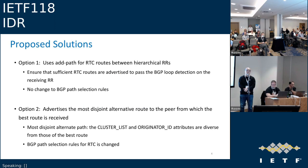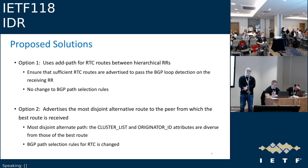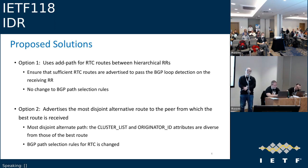The draft proposes two options. First: use AddPath for RTC routes between hierarchical RRs, ensuring that different RRs can always get sufficient RTC routes that pass BGP loop detection. The advantage is no change to BGP path selection rules. Second option: since the issue is caused by the lower-level RR receiving RTC routes it originally advertised, the higher-level RR could advertise the most disjoint alternative routes to the peer from which the best route was received. This mostly-disjoint alternative path would differ in cluster list and originator ID from the best route, though this approach requires changing the path selection rule for the RTC address family slightly.